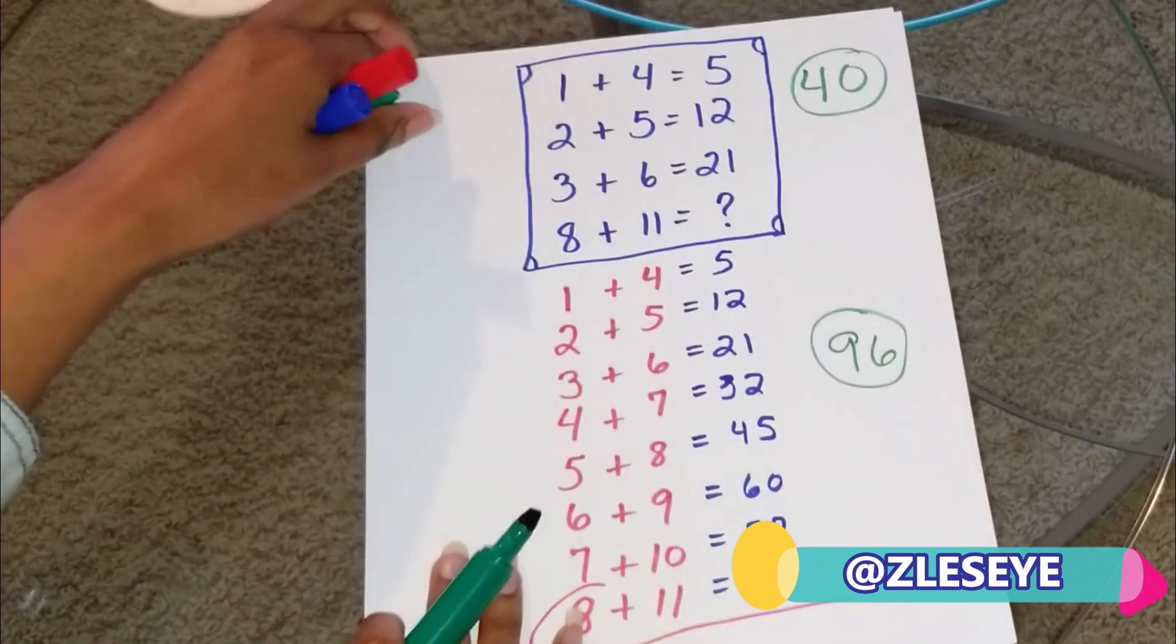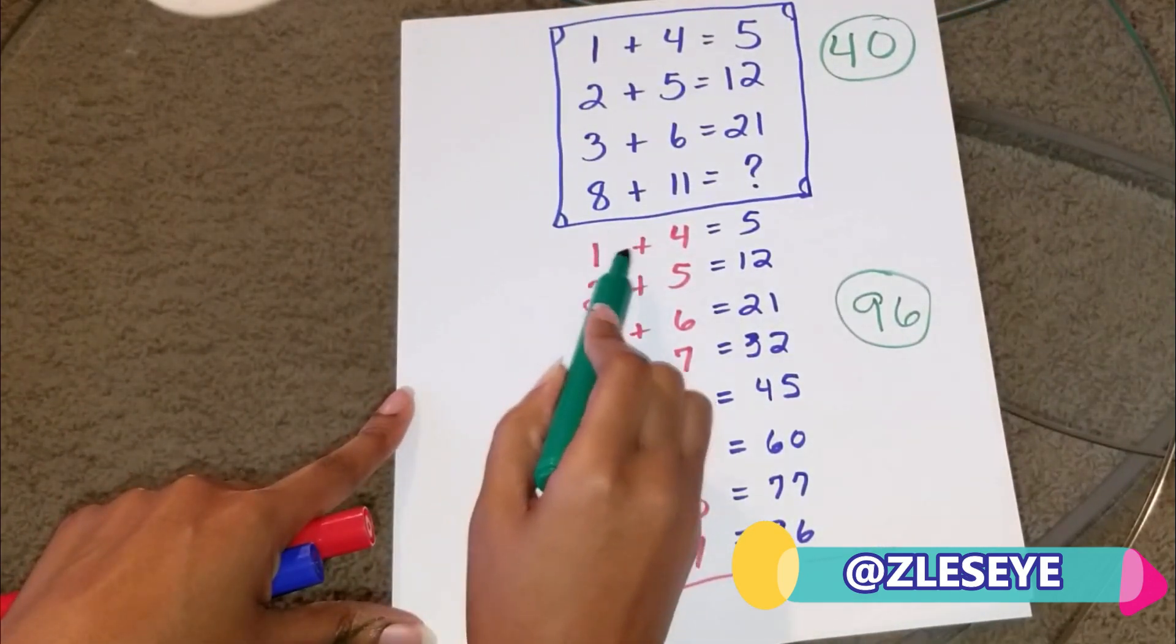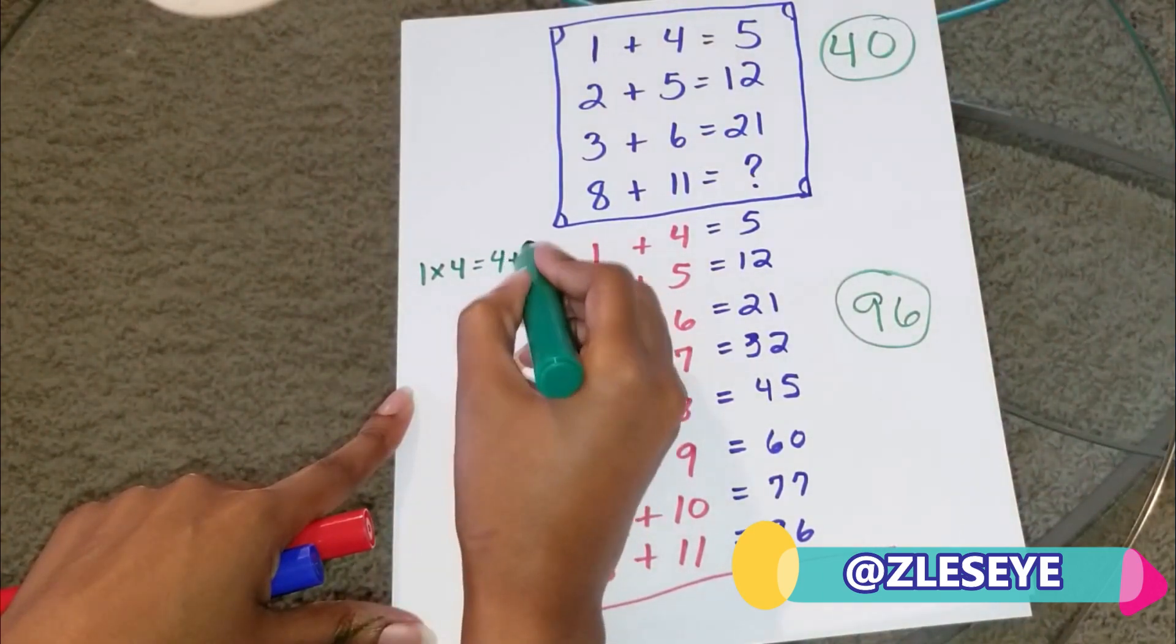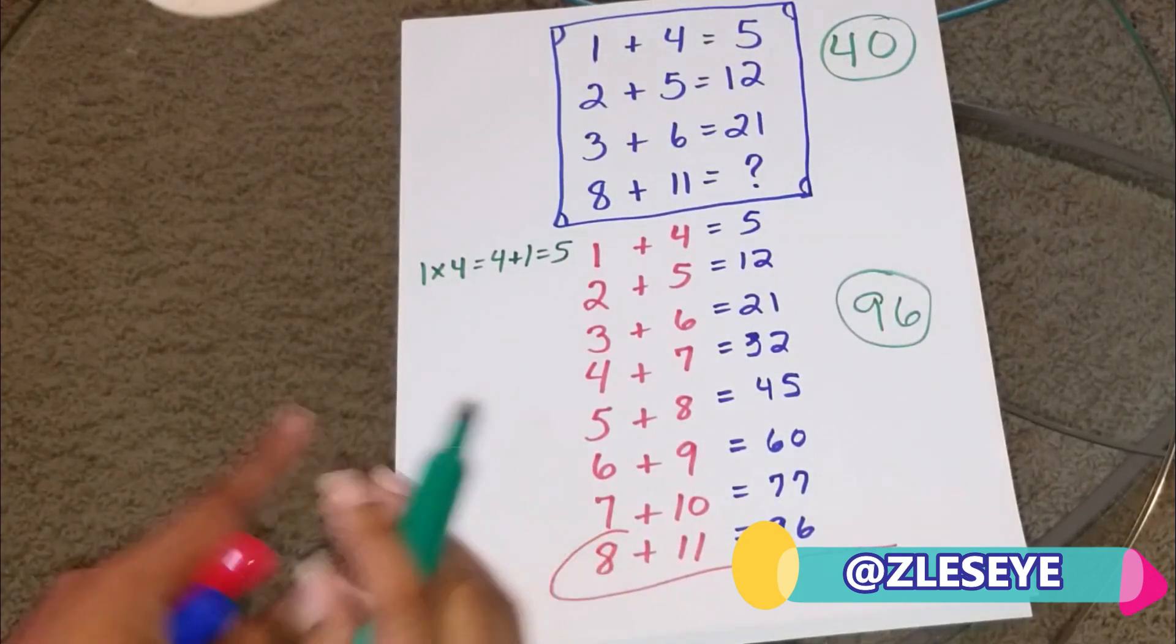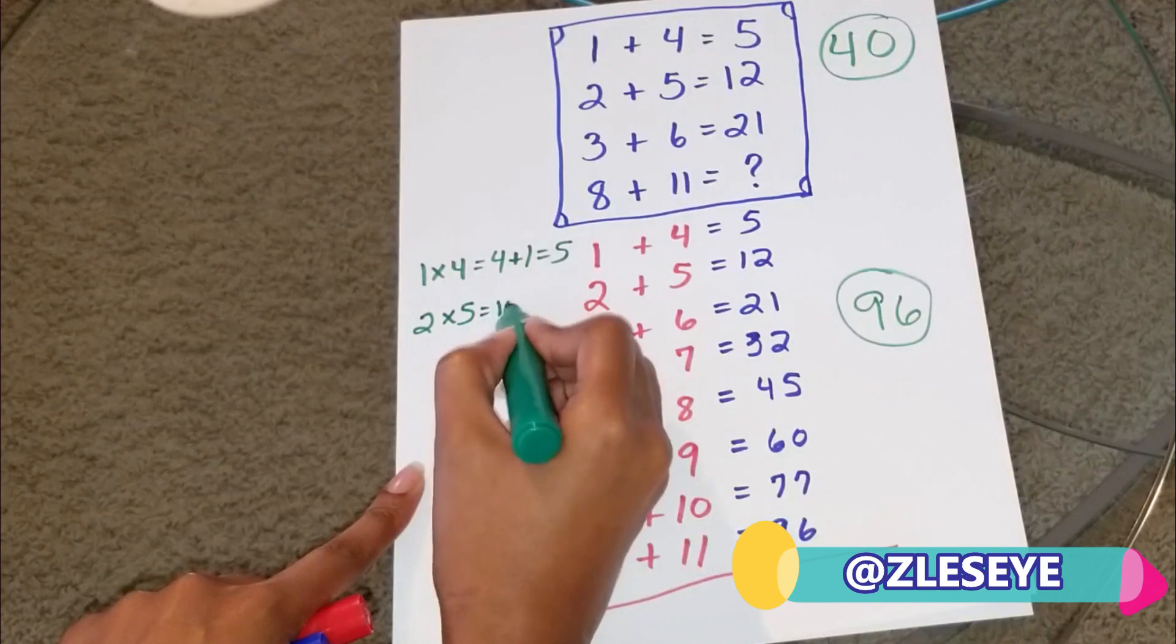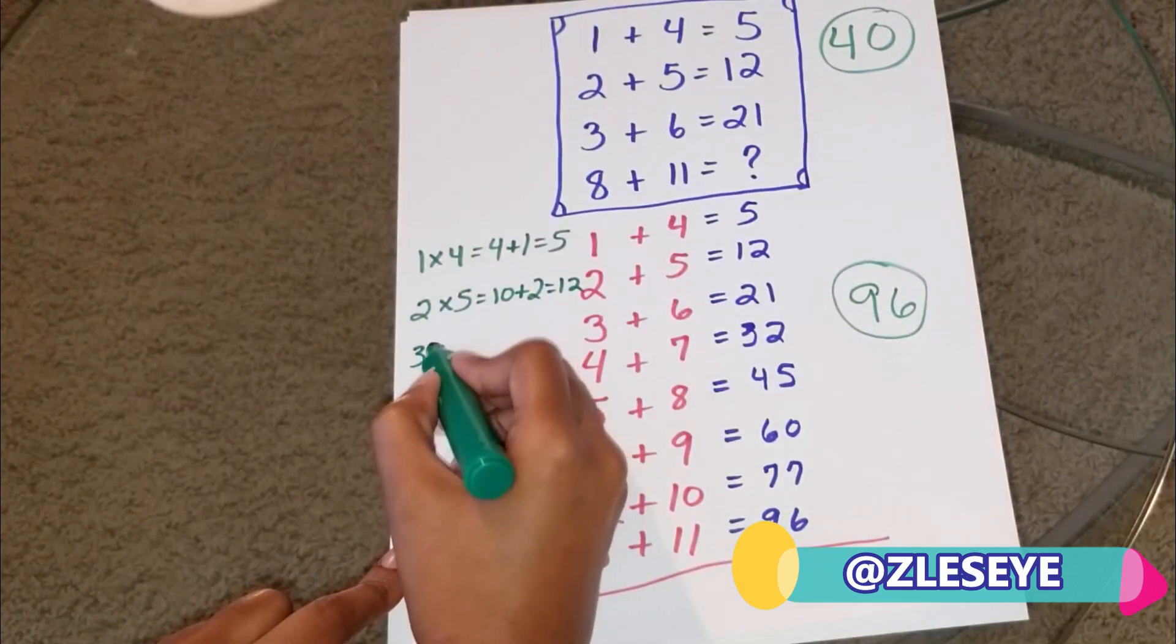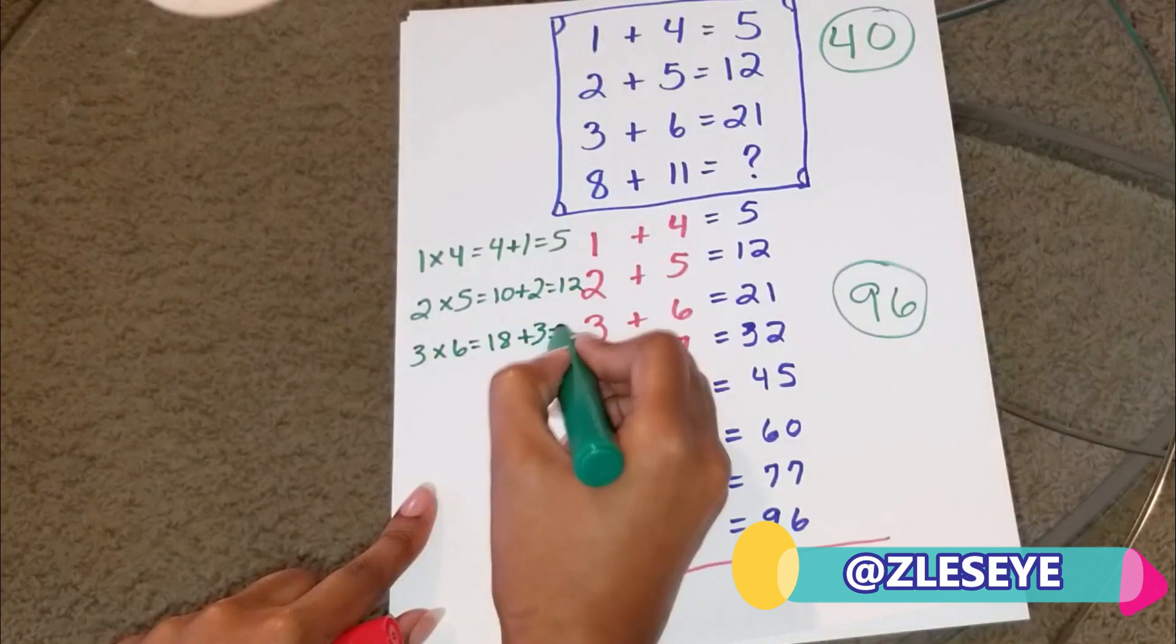So, I'm going to show you what I mean. Let's start here. Addend 1 times 4 equals 4 plus 1 equals 5. You might say, well, LeVon, why did you do that? Because it works, right? I stared at this for a while, and it works. So, let's keep going. 2 times 5 equals 10 plus what? 2 because that's the first addend equals 12. We're getting the same answers. You see? 3 times 6 equals 18 plus the first addend, which is 3. You get 21.